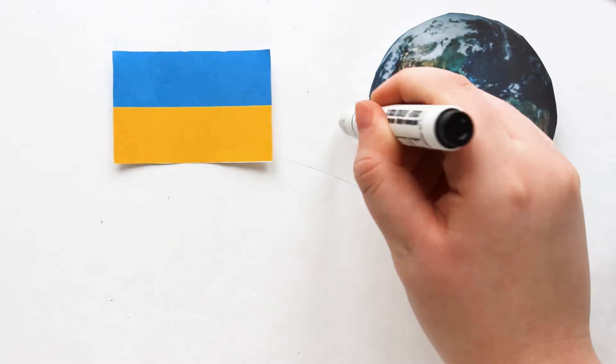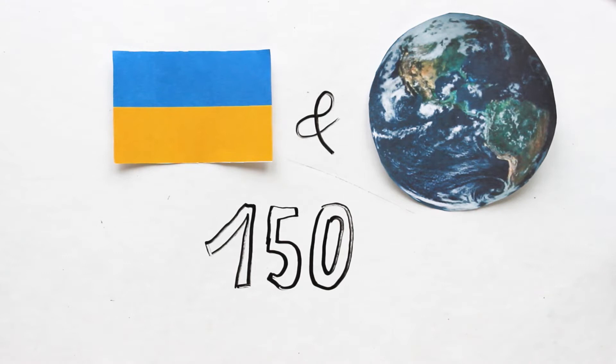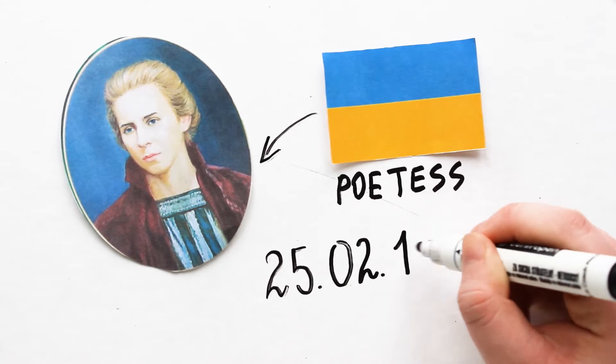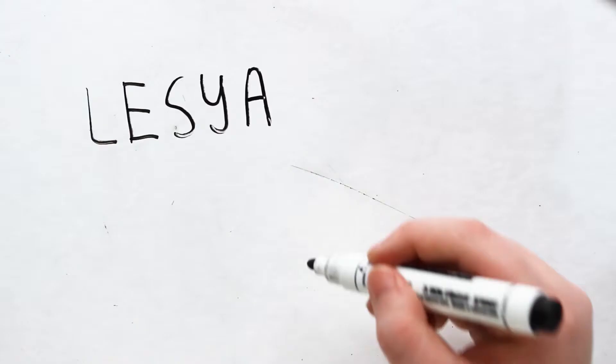Ukraine and the world are celebrating 150 years since the birth of the magnificent Ukrainian poetess Lesya Ukrainka, born on February 25, 1871.